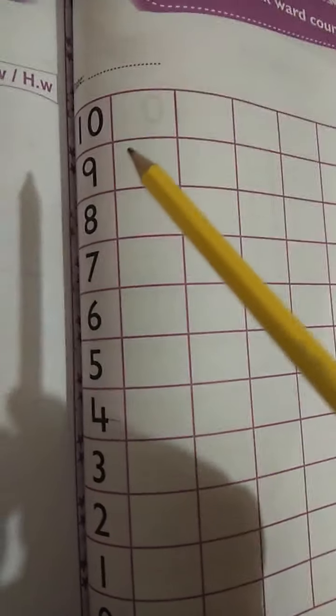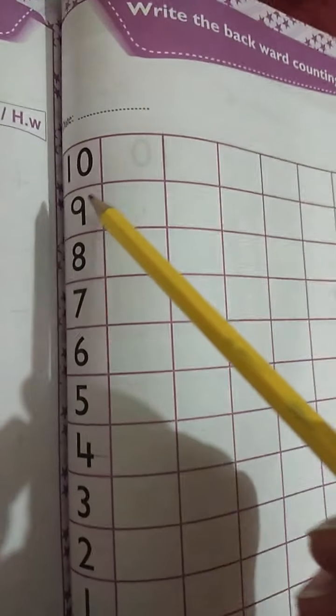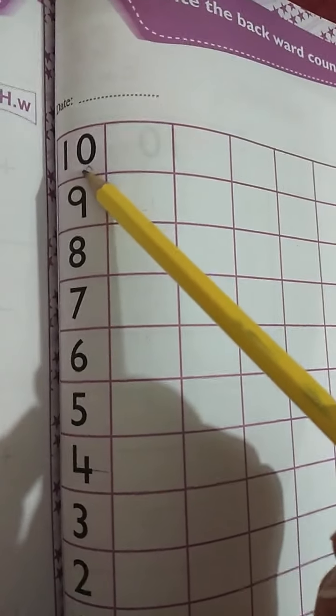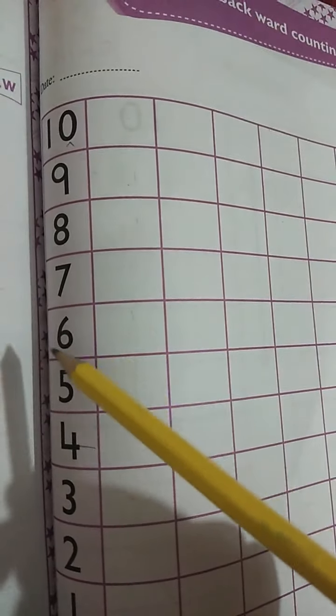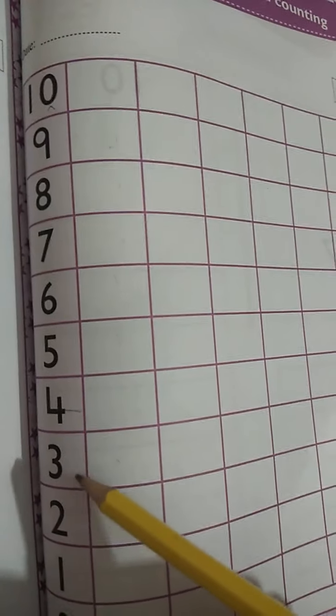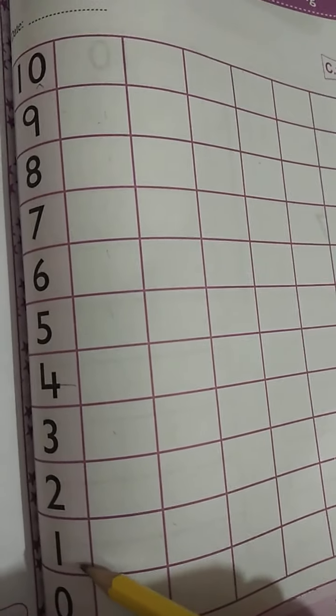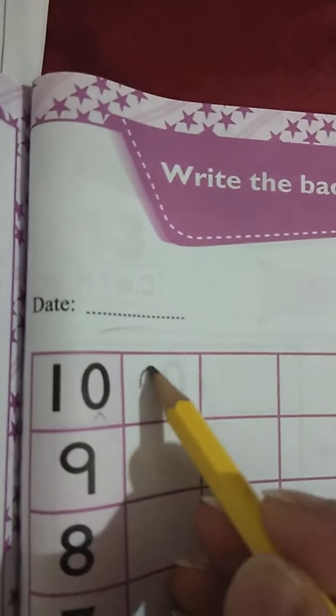They have started from 10 to 0, like 10, 9, 8, 7, 6, 5, 4, 3, 2, and 1. So the next line you will start from 20.